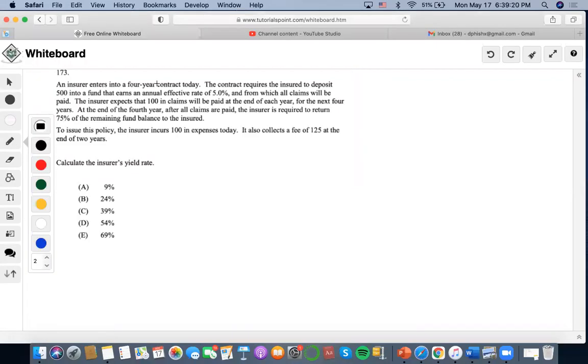Hi, so this one says an insurer enters into a four-year contract. The contract requires the insured deposit of $500 into a fund that earns an annual effective rate of 5%, from which all claims will be paid.